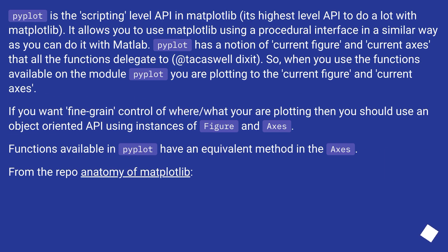The pyplot module is the scripting level API in matplotlib — its highest level API to do a lot with matplotlib. It allows you to use matplotlib using a procedural interface, in a similar way as you can do it with Matlab. The pyplot module has a notion of current figure and current axis that all the functions delegate to. So when you use the functions available on the module, you are plotting to the current figure and current axis.